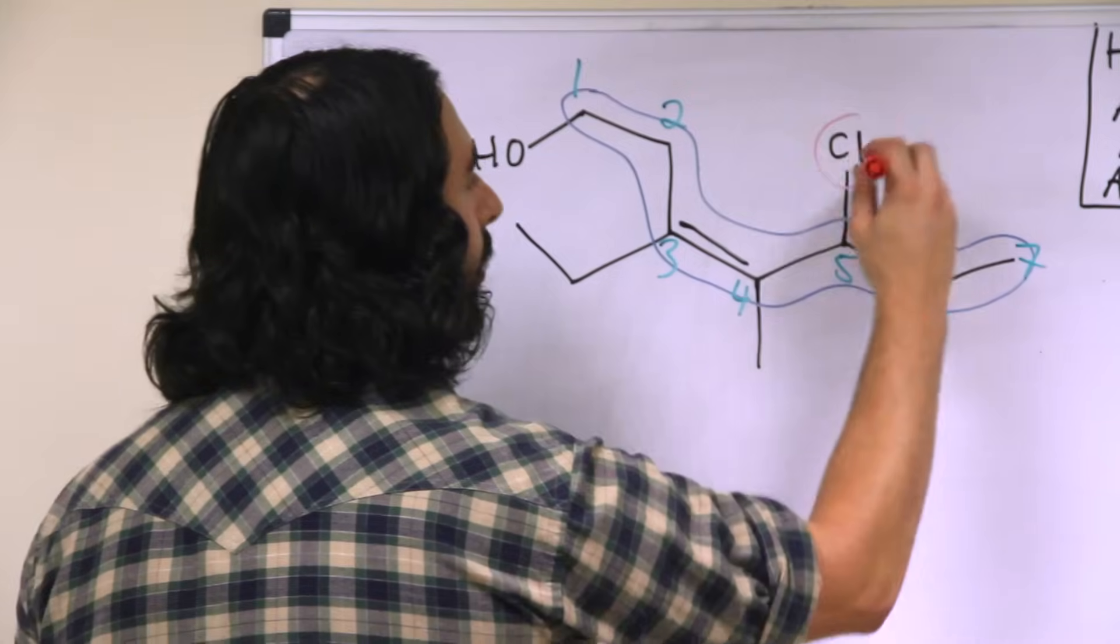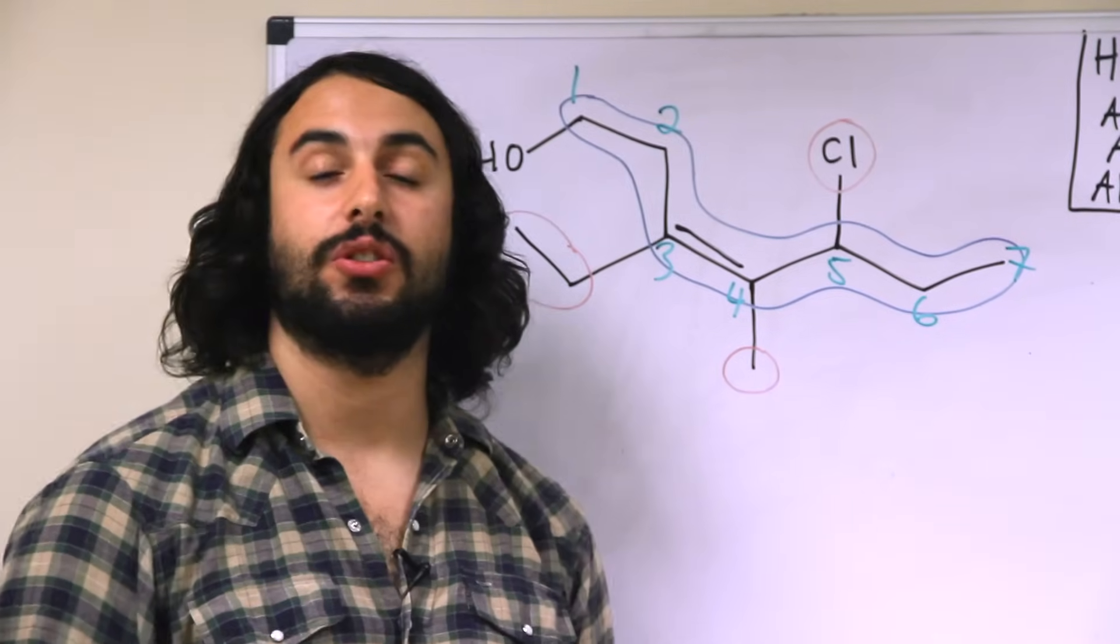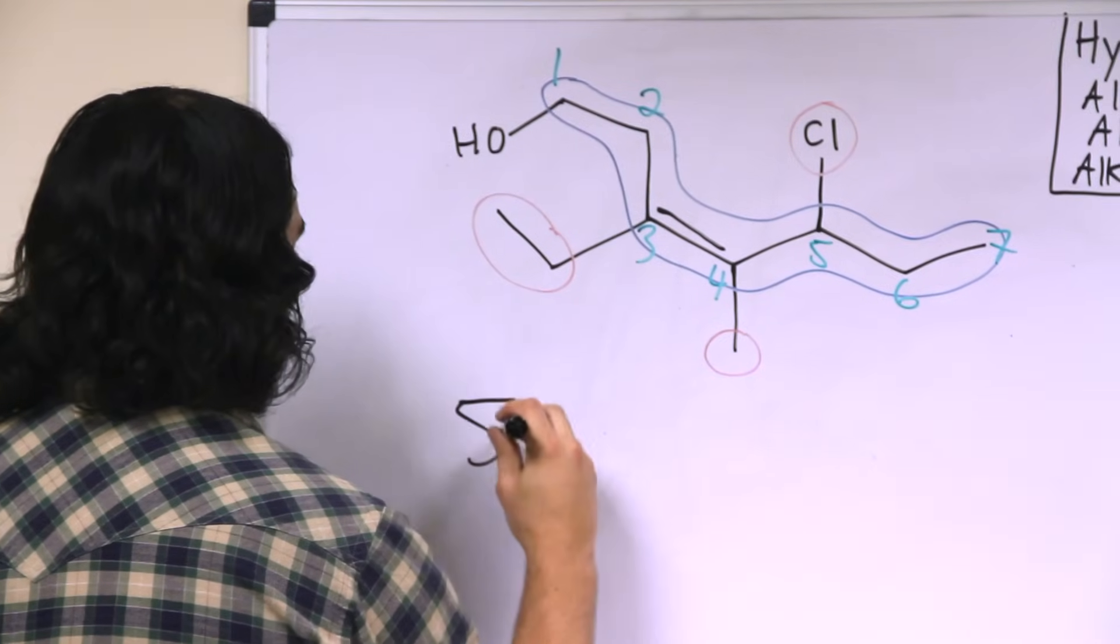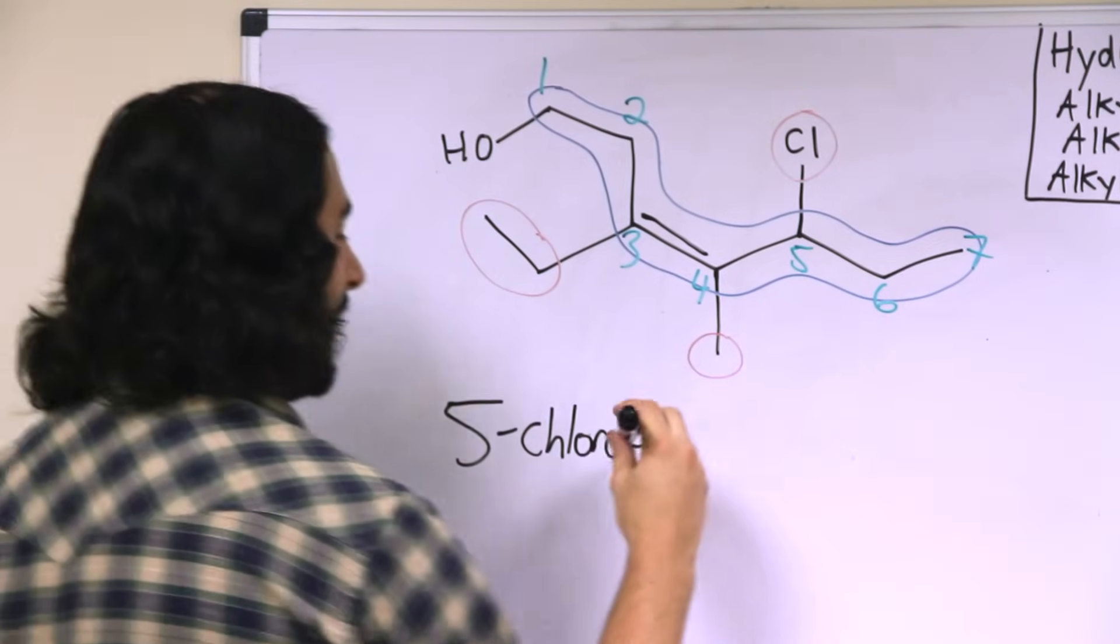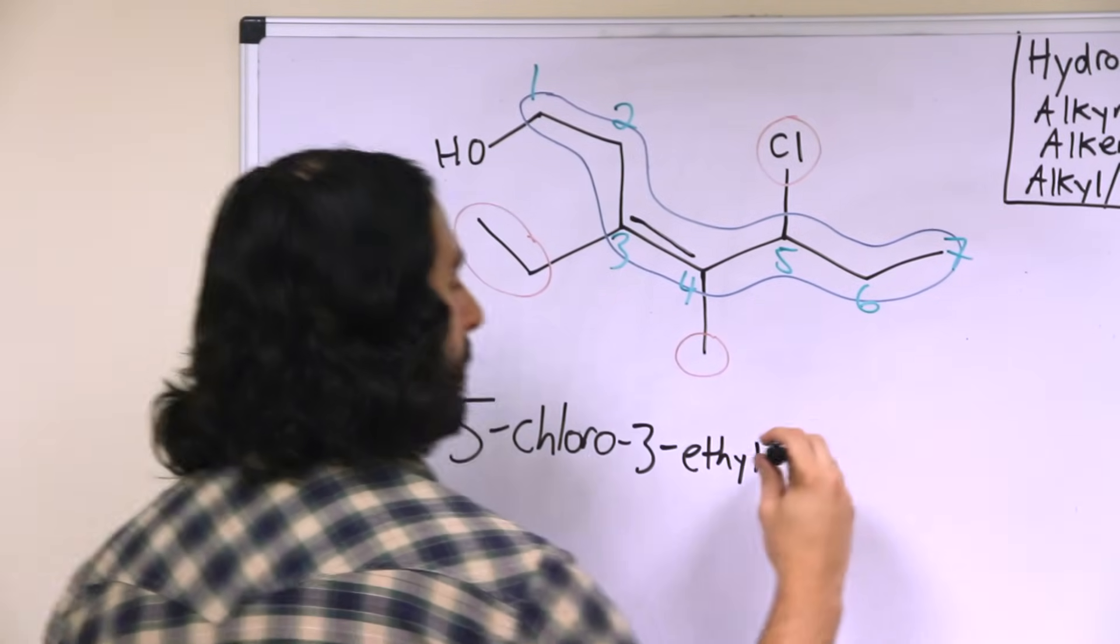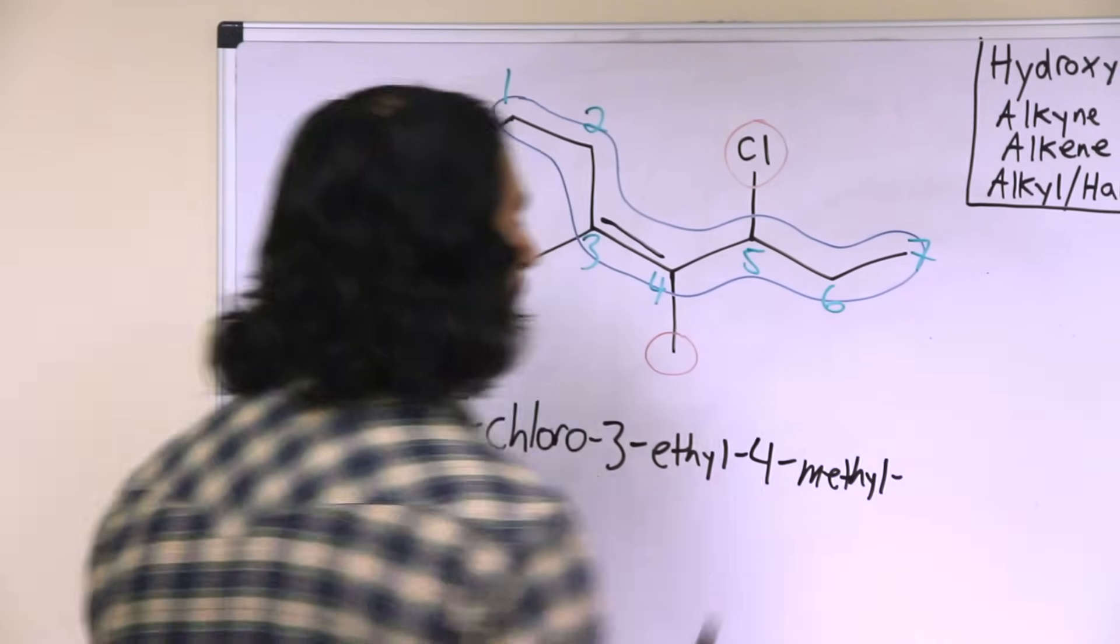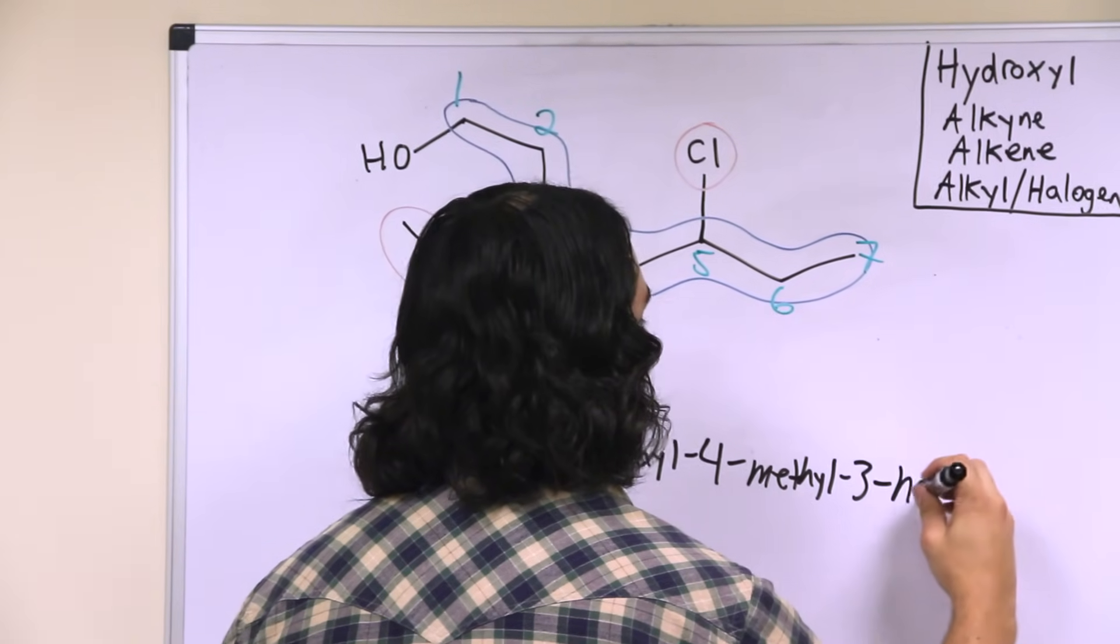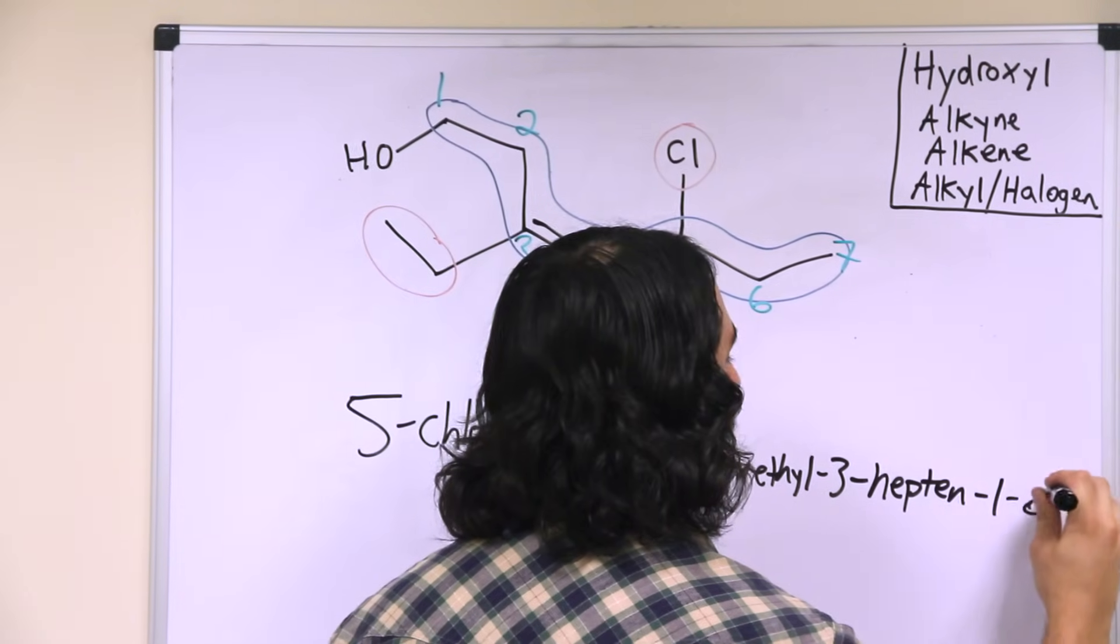We have got a chloro group, we have got a methyl group, and we've got an ethyl group. So we're going to list the chloro group first because C for chloro. So that is 5-chloro, and then we have 3-ethyl, and then we have 4-methyl, and then here's the kicker, we're going to go 3-hepten-1-ol.